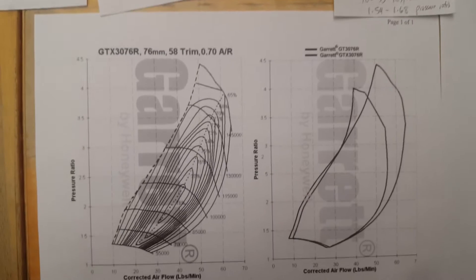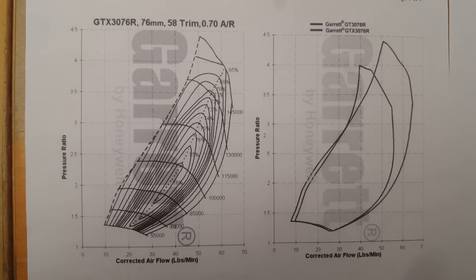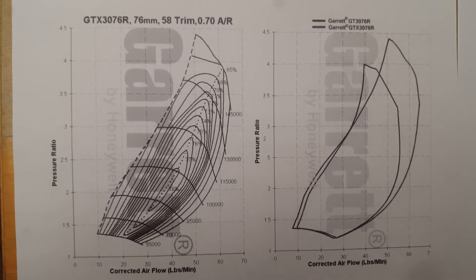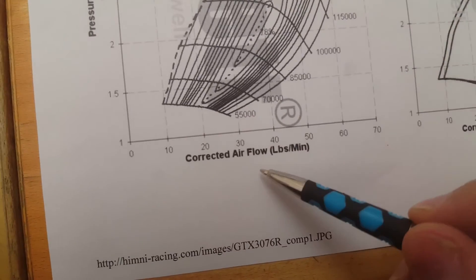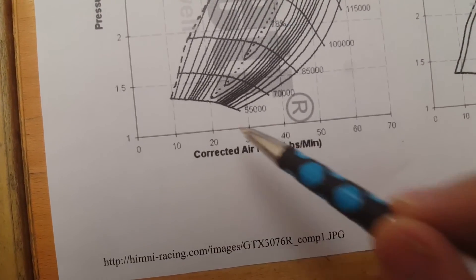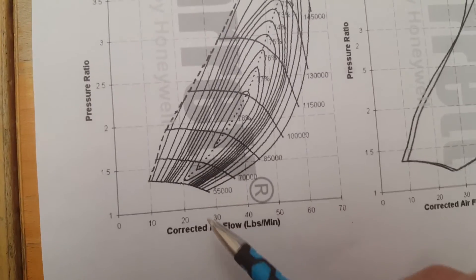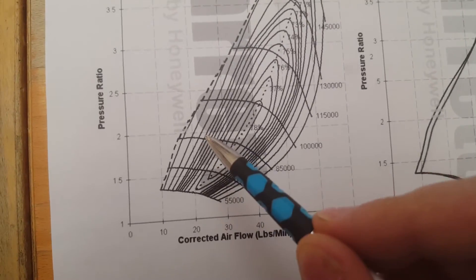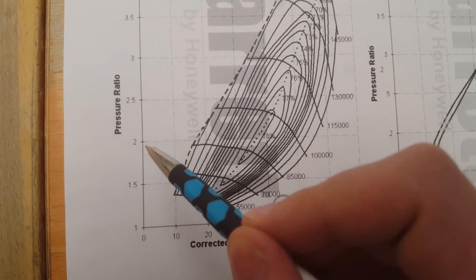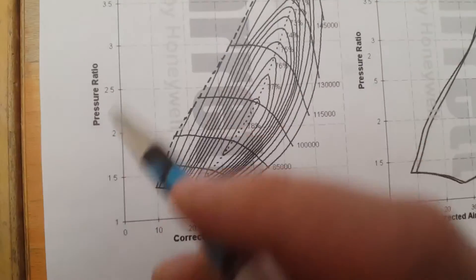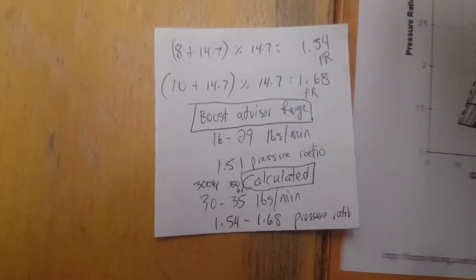So here I have the compressor map for the GTX 3076R. Basically, you have on your x-axis is corrected airflow in pounds a minute. You need to figure out what your engine needs to produce what airflow at a certain amount of horsepower relative to the pressure ratio. So there's a formula that basically, a rule of thumb formula that I've calculated here.